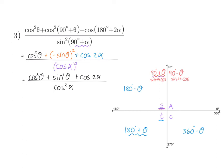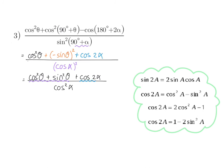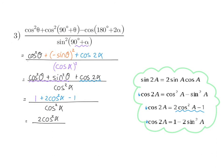We need to identify two identities: cos²(θ) + sin²(θ) = 1 from grade 10/11, and the double angle identity cos(2α). The negative sin squared becomes positive, giving cos²(θ) + sin²(θ) = 1 in the numerator. For cos(2α), we choose the form 2cos²(α) − 1 since the rest of the expression involves only cos. Substituting: 1 + 2cos²(α) − 1 over cos²(α) gives 2cos²(α) ÷ cos²(α) = 2.